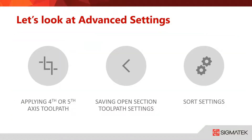Once we cover the basics we will look at advanced settings and how to use them. First we will go through setting the fourth and fifth axis compensations and what are their differences. Then we will jump into how to save the toolpath settings for your open section profiles such as angle iron, C-channel, and I-beam. Finally we will go through your sort settings and how to use these to control the flow of your toolpath around your part.